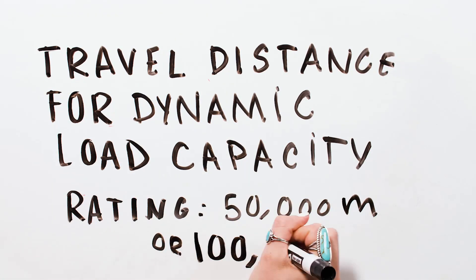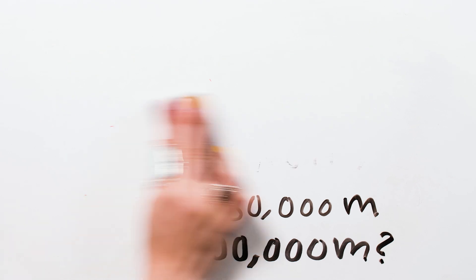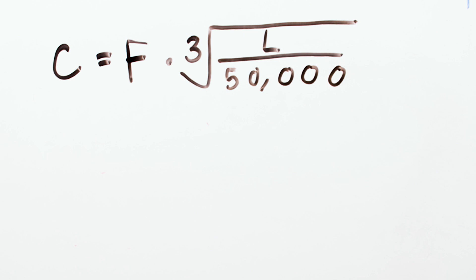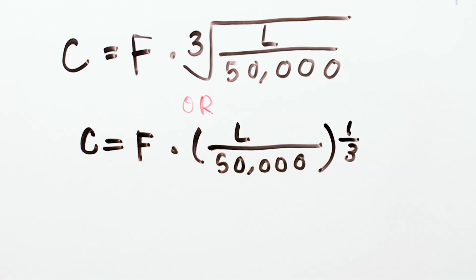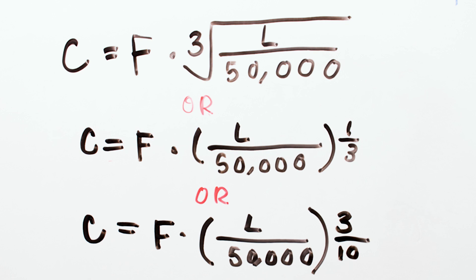Another thing to be aware of when determining bearing life or load capacity is the travel distance on which the bearing's load capacity is based. If the load capacity for the bearing series you're looking at is based on 50 kilometers or 50,000 meters, the 100,000 in the denominator of the equation is replaced with 50,000. This is true whether the bearing uses recirculating balls or rollers. For recirculating roller bearings with a load capacity based on 50,000 meters, the equation looks like this.